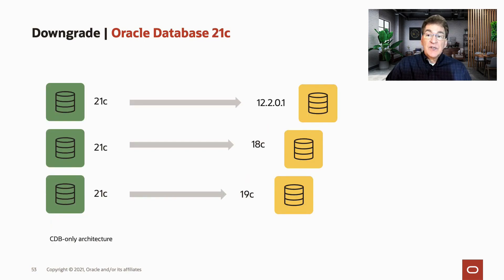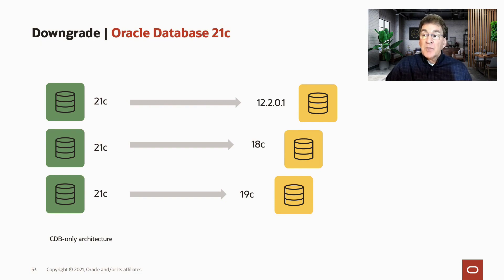These are the releases to which you can downgrade from 21c. You will see that 11.2.0.4 is not included at all. This is because 21c always uses the CDB architecture, and there is no CDB architecture in 11.2.